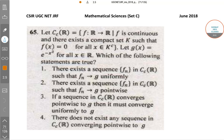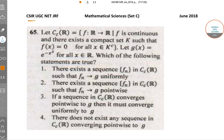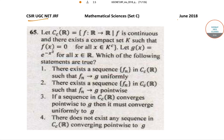Hello students, welcome to Sorpses classes. Today we will be solving the CSIR UGC NET questions from the June 2018 paper. We will be solving set C, which is the Mathematical Sciences paper. So let's start with question number 65.